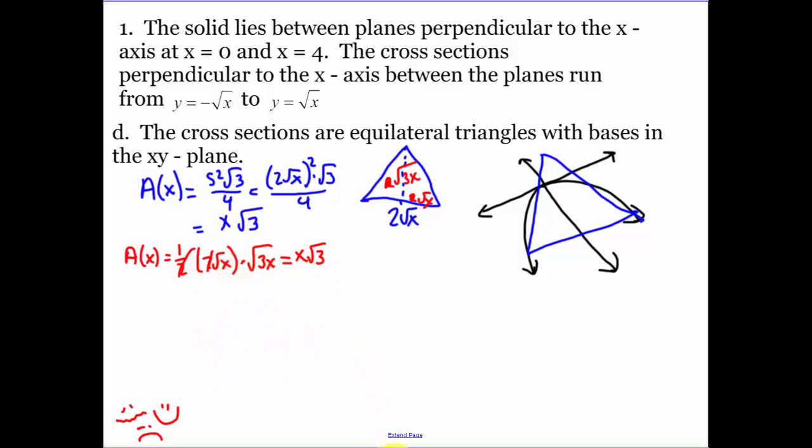Now, finding my area from zero to four, the area of each one of our triangles we decided was x root 3 dx. I can pull the root 3 up front, take the integral of x. That's one half x squared from zero to four, so we get our answer of 8 root 3. That's what our volume would be when I have a bunch of equilateral triangles making up our area.